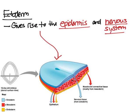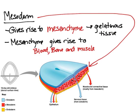The ectoderm is represented by the blue layer on the diagram shown below, and that's why I drew the red arrow to the blue layer. Now let's talk about the mesoderm. The mesoderm gives rise to mesenchyme, which is essentially just gelatinous tissue — that's the middle layer, shown in red. Mesoderm essentially becomes mesenchyme, and then mesenchyme gives rise to blood, bone, and muscle. So you could think of it as mesoderm to mesenchyme to blood, bone, and muscle.